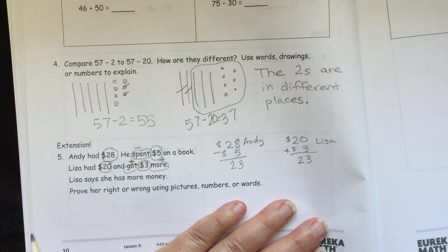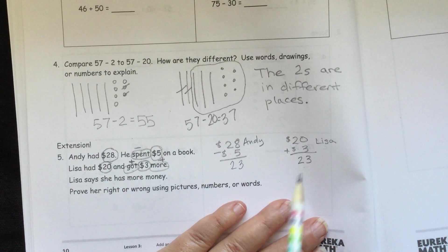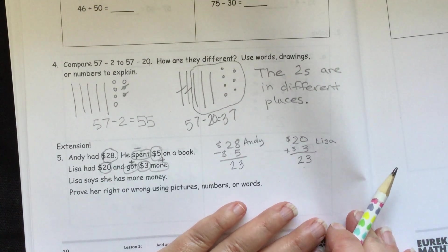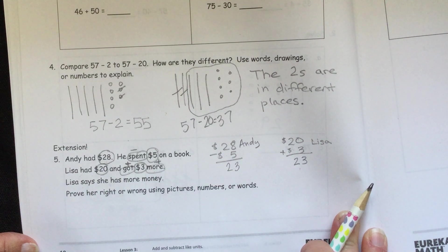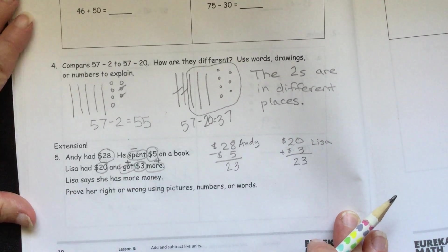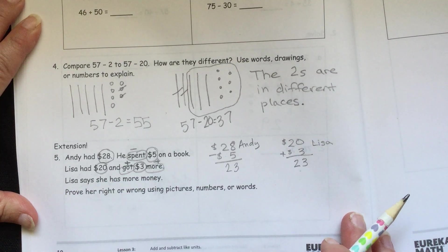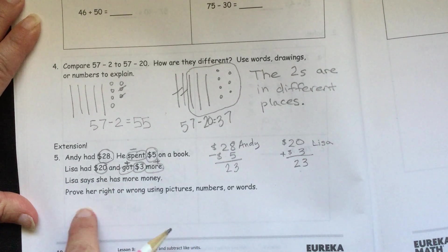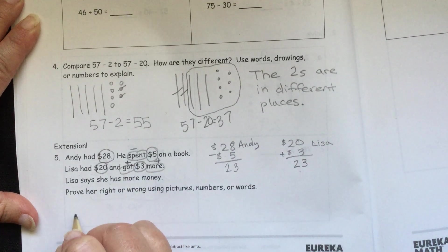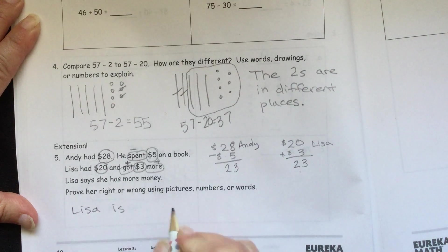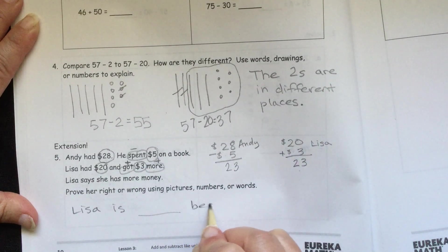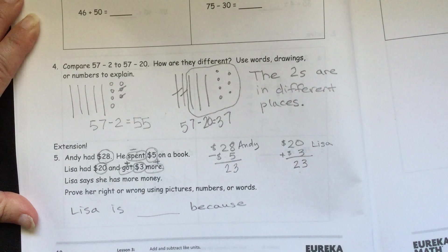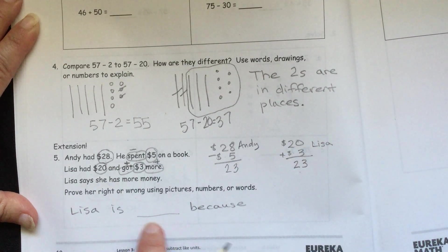So Lisa says she has more money. Does Lisa have more money? Well, 23 and 23. What do you think? Does she have more? Or do they have the same? Or does she have less? So I'm going to let you do the rest of that. And you can write, is she right or is she wrong? And then because, and then you write the rest. Why is she right or is she wrong?